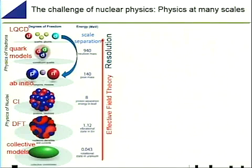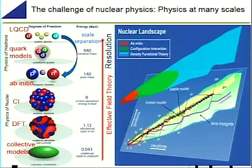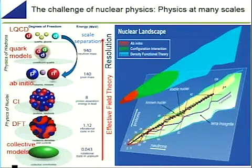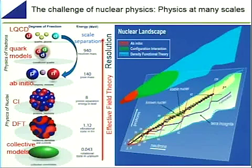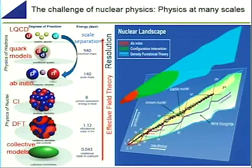Density functional models describe your entire nucleus as a density distribution that is minimized against the energy. These different models are more suited for different regions of the nuclear landscape. Here is the Segré chart, organizing all isotopes by neutron number and proton number. Ab initio models in red can only reach up to masses around mass 20. Larger than that you need configuration interaction models, between mass 20 and around mass 132, which would be tin-132. Larger than that you need density functionals to predict heavier and superheavy nuclei.